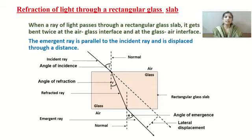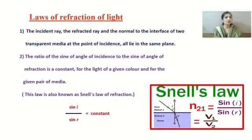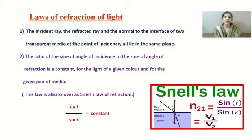Next are the laws of refraction of light. The first law states that the incident ray, the refracted ray, and the normal to the interface of the two transparent media at the point of incidence all lie in the same plane. The second law states that the ratio of the sine of the angle of incidence to the sine of the angle of refraction is constant.